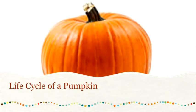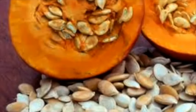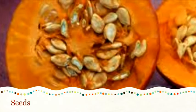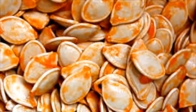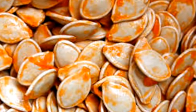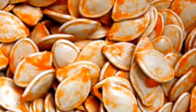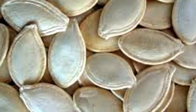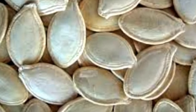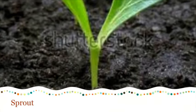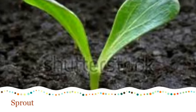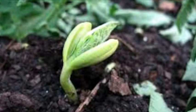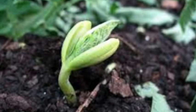The Life Cycle of a Pumpkin. Like all plants, pumpkins start out as seeds. You can find seeds on the inside of a pumpkin. Once a pumpkin seed has been planted, it grows into a sprout. Here are some examples of a pumpkin sprout.